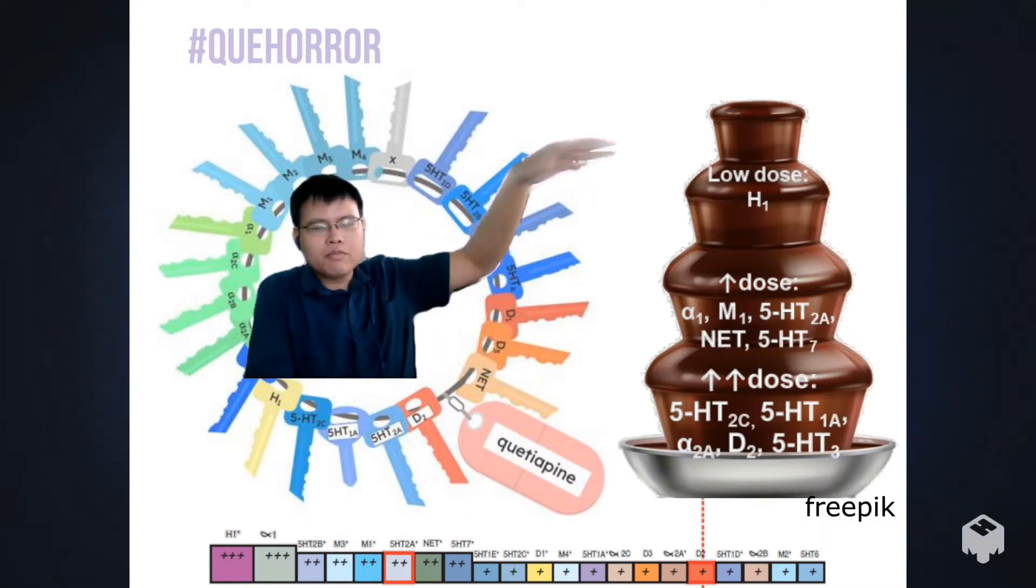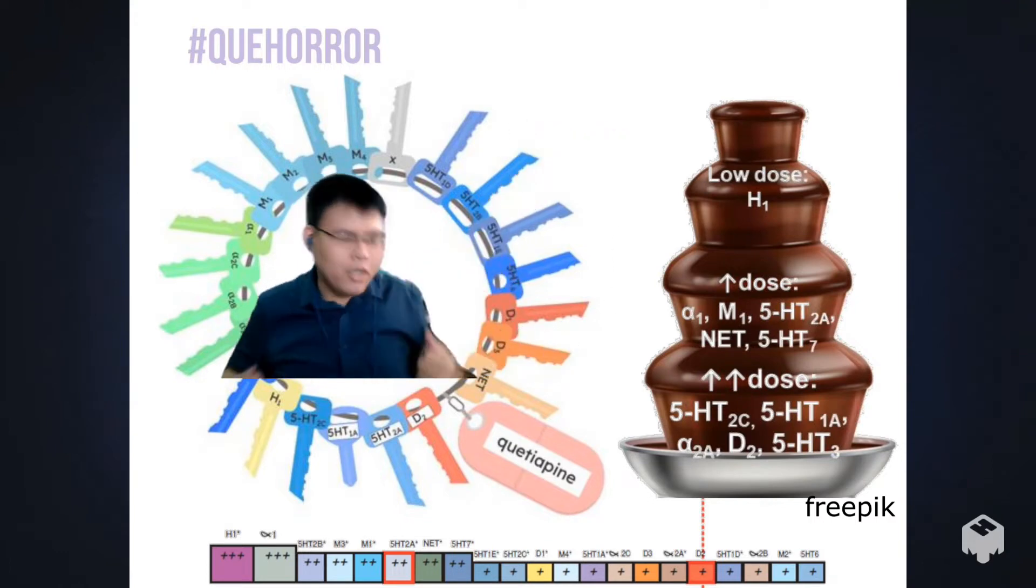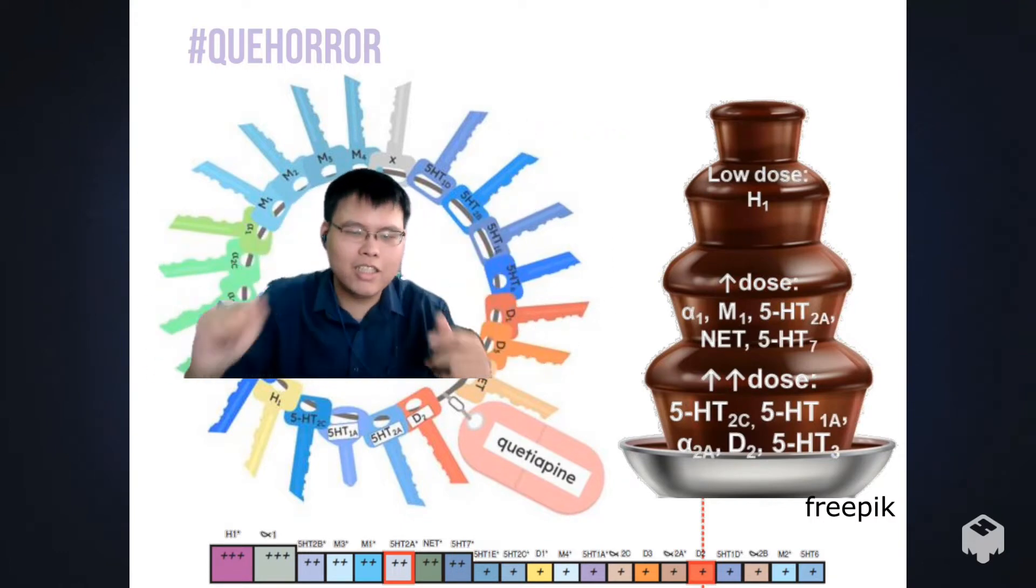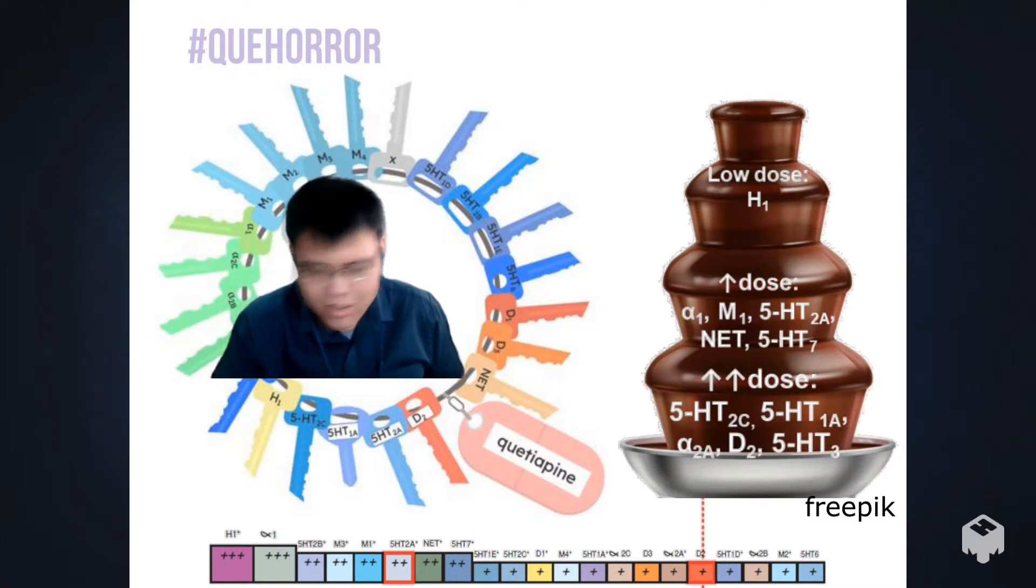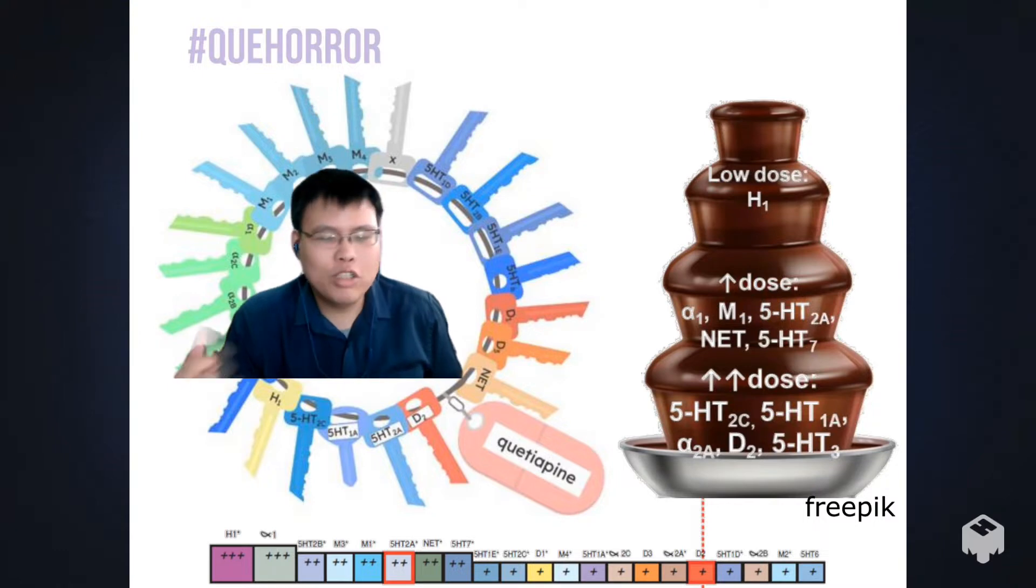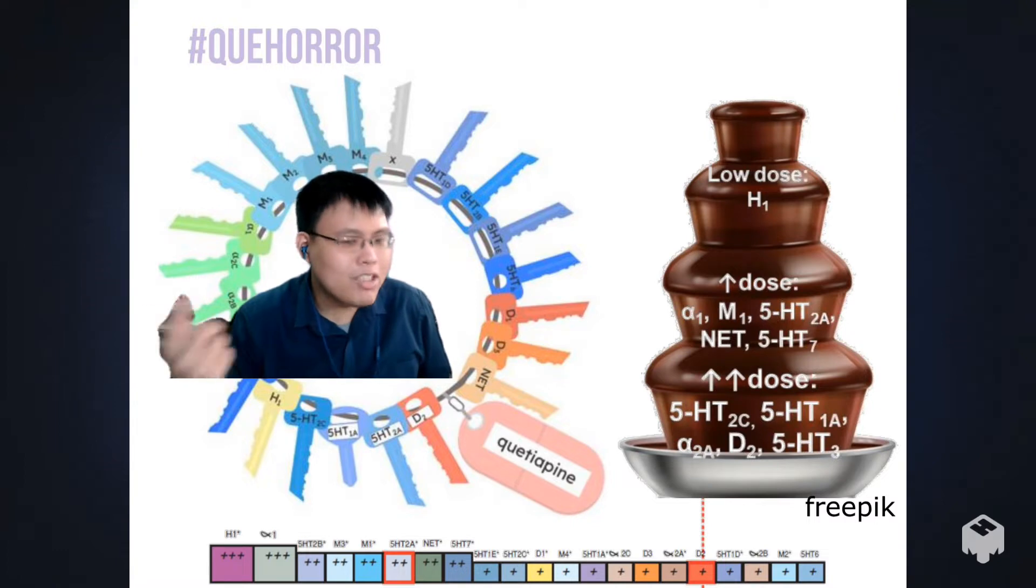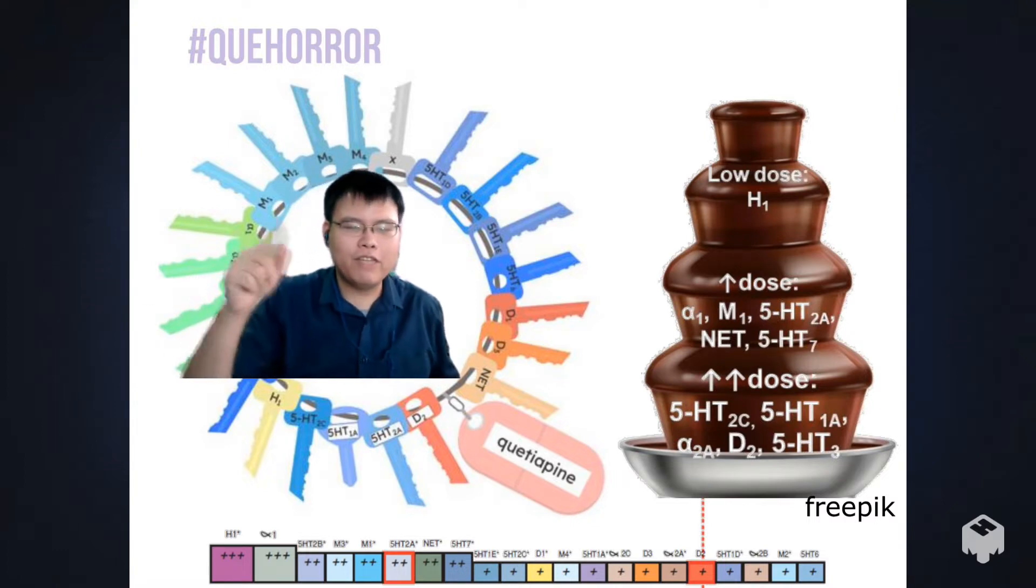Using our chocolate fountain model, I'm just gonna cover up the lock and key bit here. As a so-called antipsychotic and as a second generation one at that, it binds to an awful lot. But of course, quetiapine is going to have its favorites.